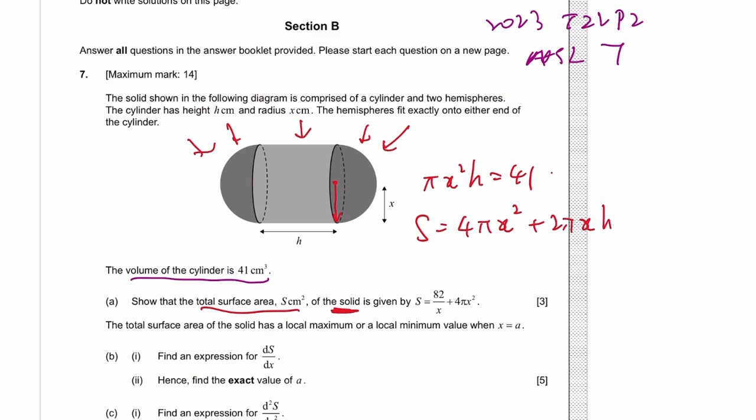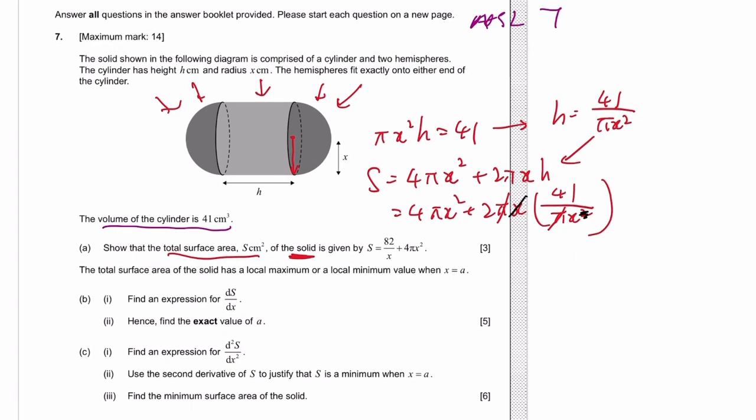From here, h is 41 over pi x squared, so we'll sub it in. So it's 4 pi x squared plus 2 pi x times 41 over pi x squared. The pi cancels out, one of the x also cancels out, and 2 times 41 is 82. So we get what they want.